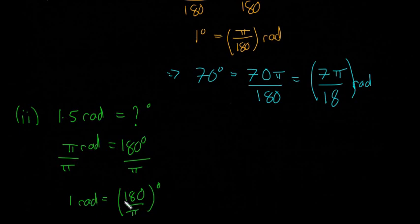That's how much one radian is, but the actual number doesn't really matter. Now we want to find what 1.5 radians is, so if one radian is this then 1.5 radians is just 1.5 times this.